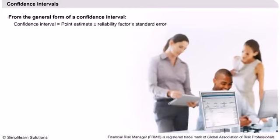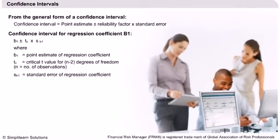Confidence intervals. From what we learned in the previous sessions, we know that any confidence interval can be obtained by adding or subtracting the product of the reliability factor and the standard error with the point estimate. The reliability factor is usually the critical Z or T values for the given confidence probability. Let us find the confidence interval for the regression coefficient B1. In this case, the point estimate of the coefficient B1 is added to the product of the critical T value and the standard error of regression coefficient to get the upper limit of the interval.